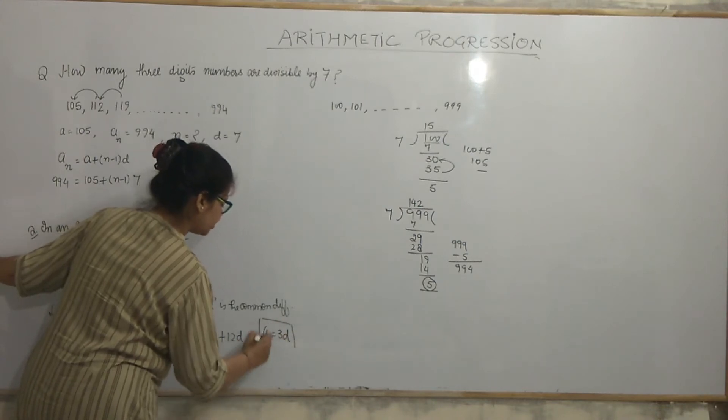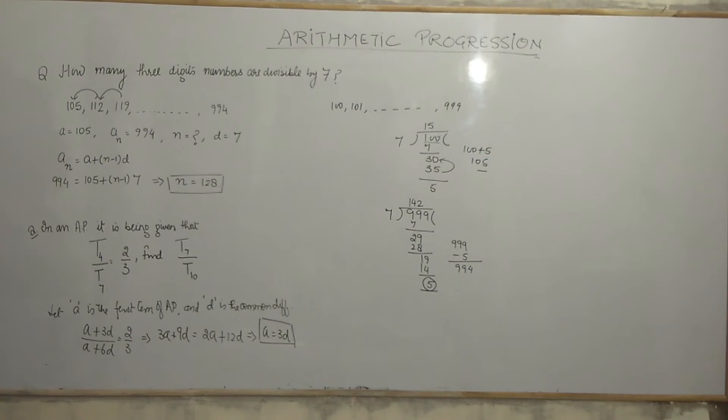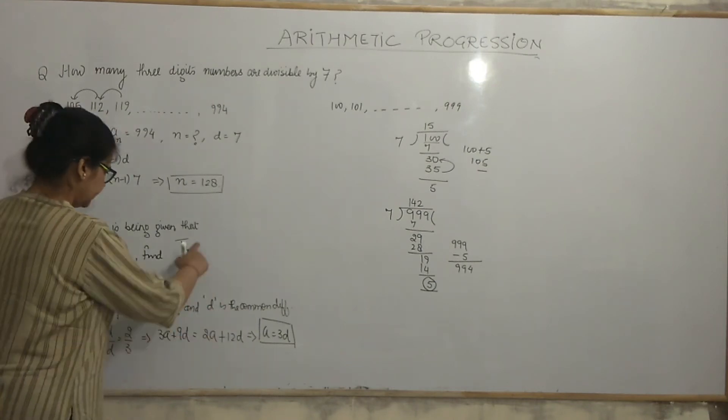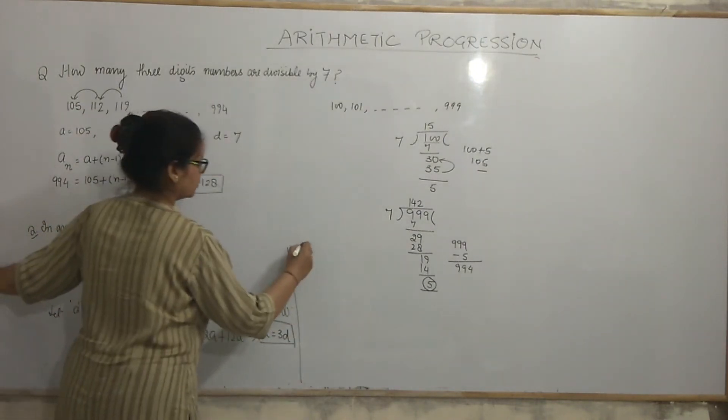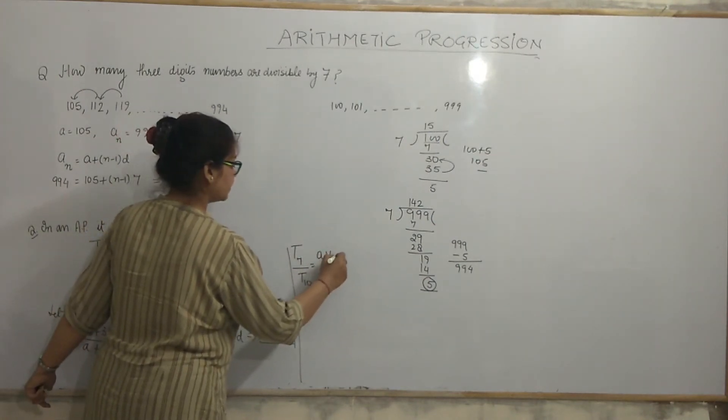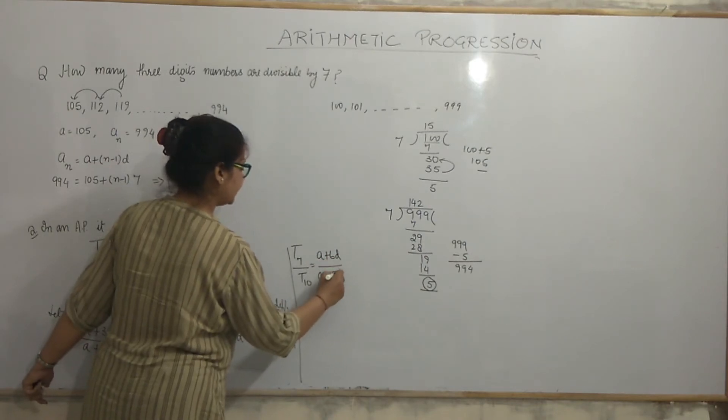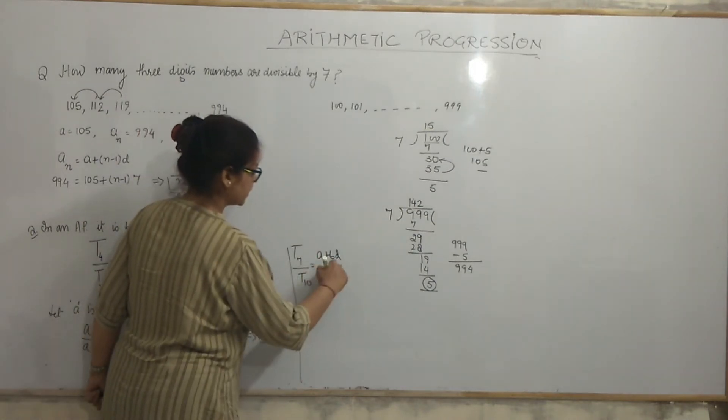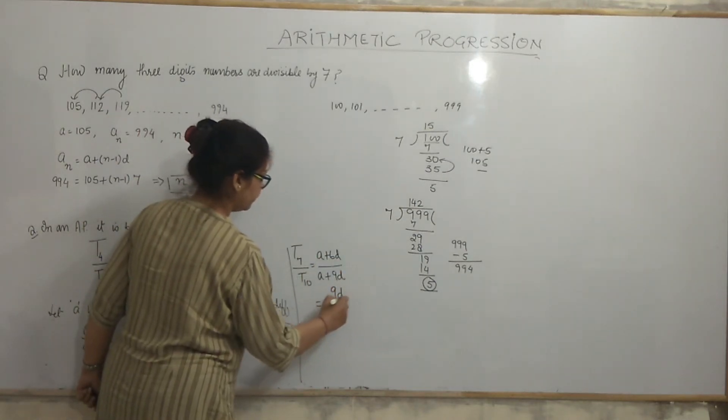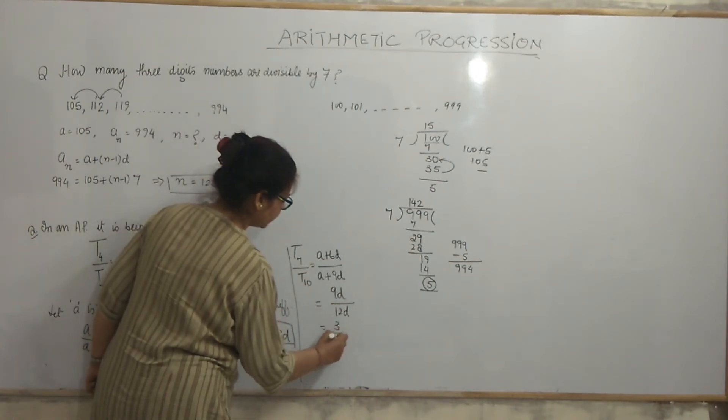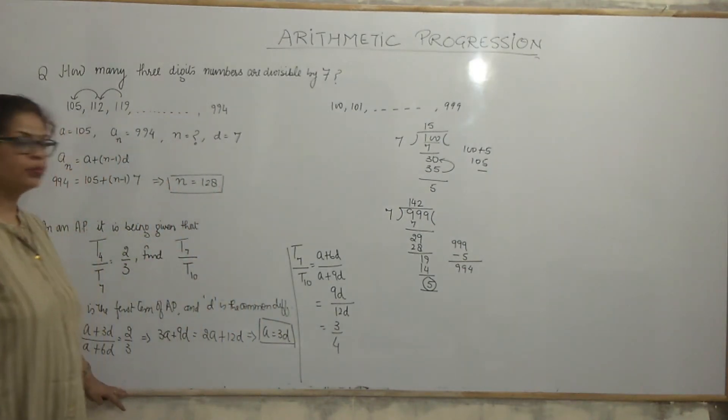So, t4 is a plus 3d. t7 is a plus 6d equals 2 by 3. Please cross multiply. 3a plus 9d is equal to 2a plus 12d. Now, what happened? a is equal to 3d. Wonderful. We have got a relation between a and d. We can convert a in terms of d or whatever we want. I mean, d in terms of a.